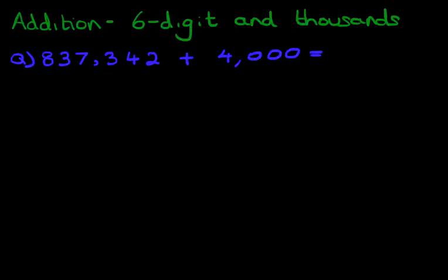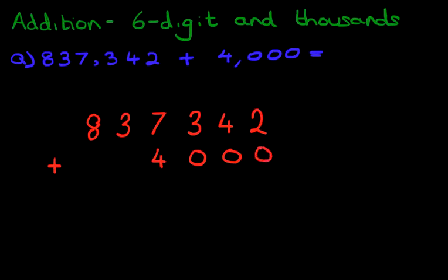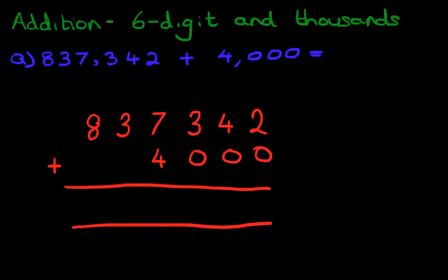So the first stage is to write this question in the vertical format. So let's do that over here. 837,342 plus, and note how we write this down, 4,000. So what we have done here is that we have simply rewritten the question from the horizontal format into the vertical format.